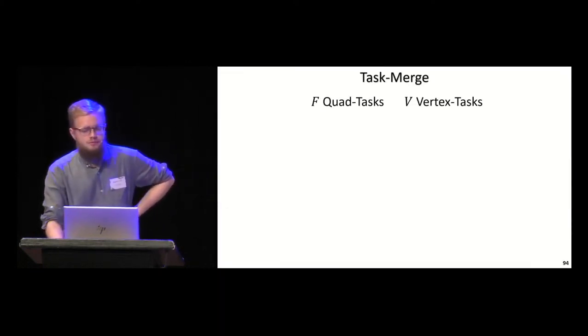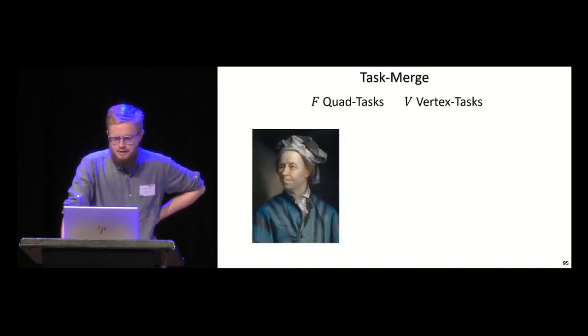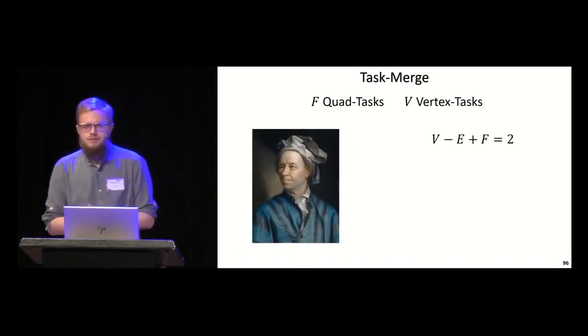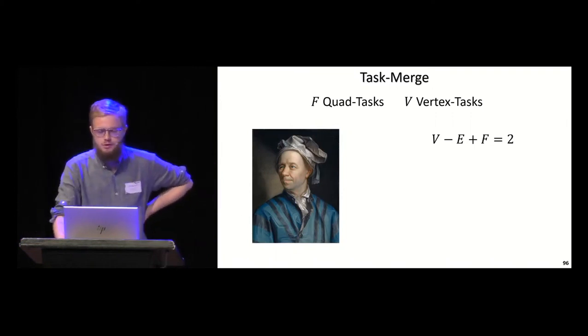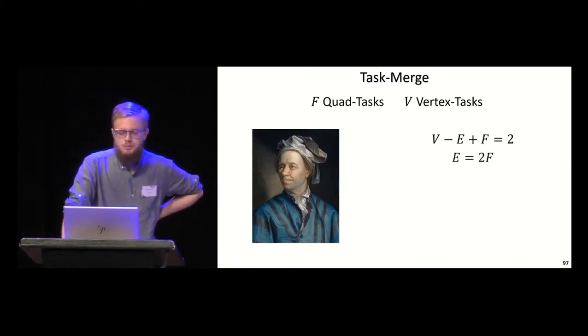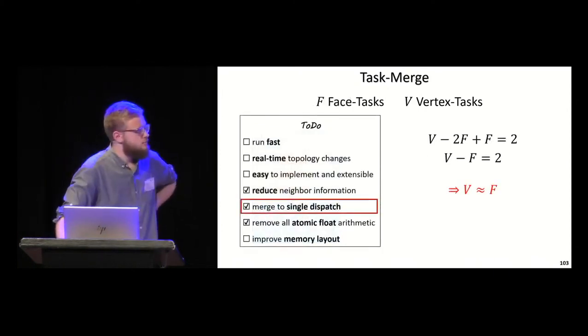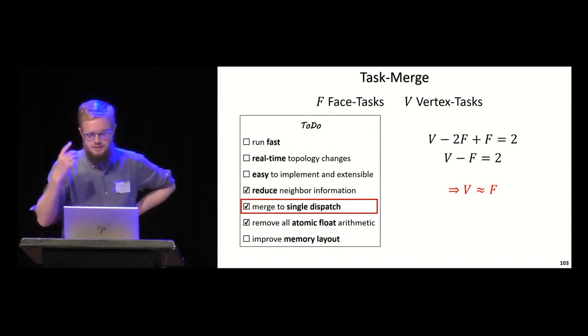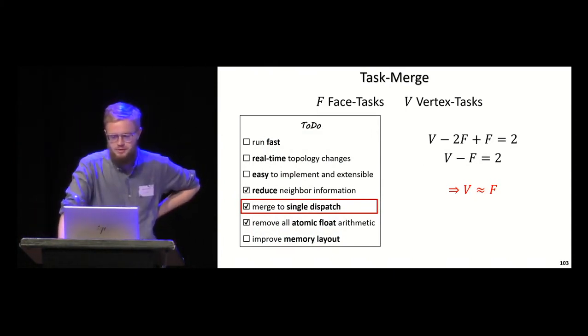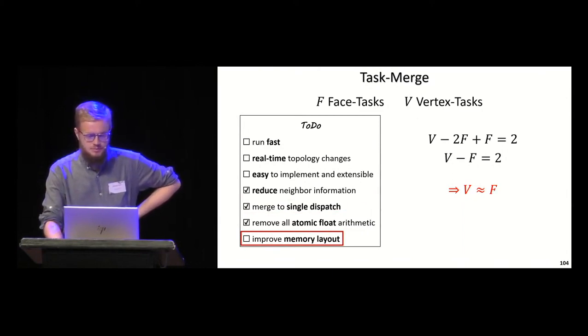But we still have two separate dispatches: the quad task and the vertex task. Let's talk about how we merge these. For a mesh with F faces, we have F quad tasks, and with V vertices, we have V vertex tasks. Remember Euler, who found a ratio between vertices, edges, and faces of closed topology homeomorphic to a sphere. We know we've assigned two edges to each quad, so we can plug this in and rearrange. Then we can say the number of vertices is approximately equal to the number of faces. So we can plug both in the same kernel and exit early if there's an edge case when one number is greater than the other. We've merged it to a single dispatch.